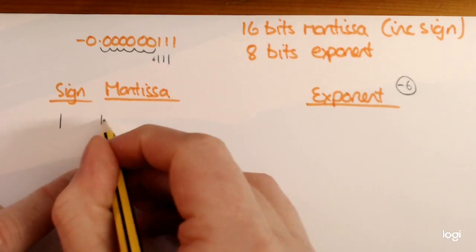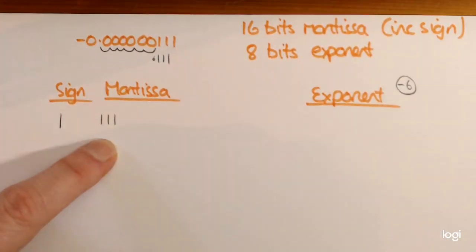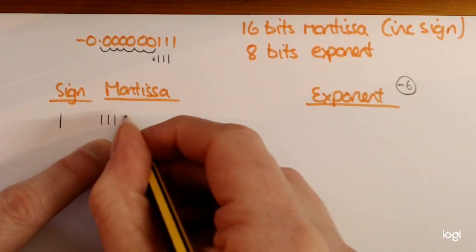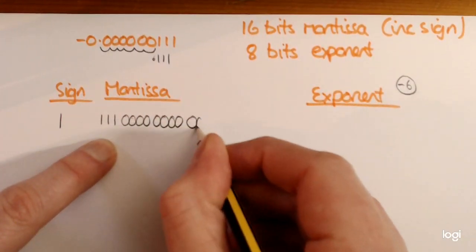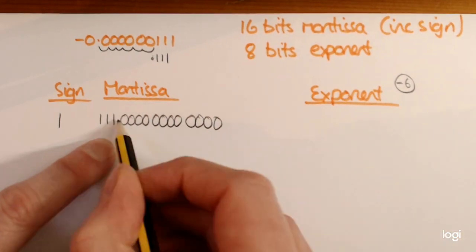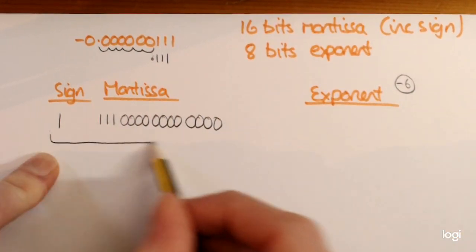It's your Mantissa, and we just need to pad it out with 0s. 1, 2, 3, 4, 5, 6, 7, 8, 9, 10, 11, 12, 13, 14, 15, 16. So that's your 16 bits.